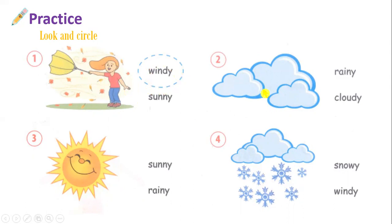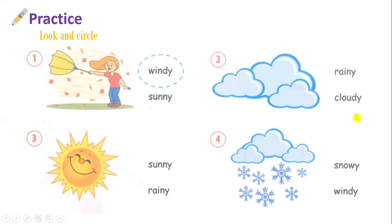Number two — rainy or cloudy. Chúng ta sẽ lựa chọn 2 đáp án là rainy or cloudy. Look at the picture, what can you see in this picture? Can you tell me your answer? That's good — you can see cloud. Chúng ta sẽ nhìn thấy đám mây, tức là hiện tượng này thể hiện là trời nhiều mây. Và khi trời nhiều mây, có mây là từ cloudy.